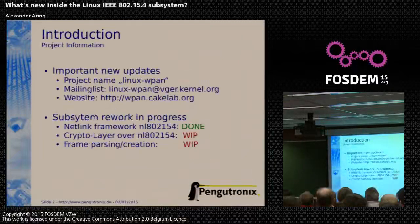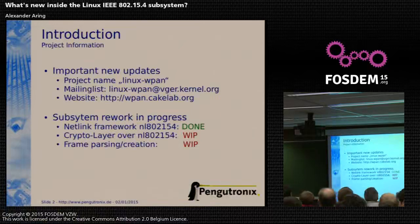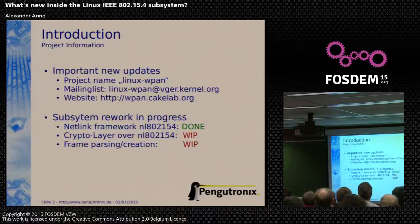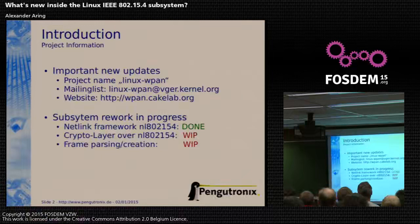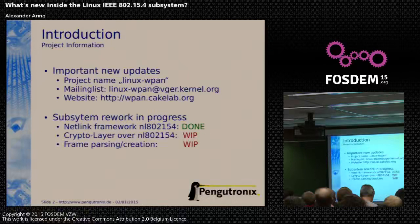Now let's start the presentation. Important new project updates: last year the name was Linux ZigBee, but we don't name the project ZigBee anymore — we are now Linux wpan. We have a new mailing list hosted on kernel.org, and a new website, wpan.kernel.org. Currently we have a subsystem rework in progress because the current subsystem was not very nice to use. This contains a netlink framework, NL 802.15.4, which I'll talk about later.